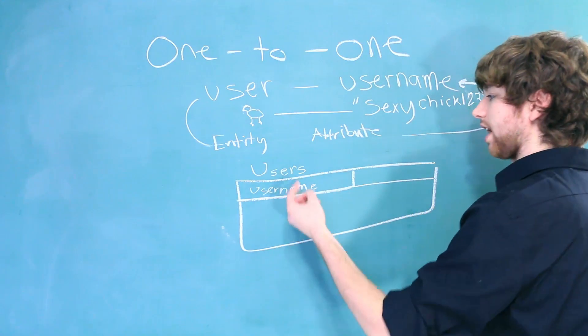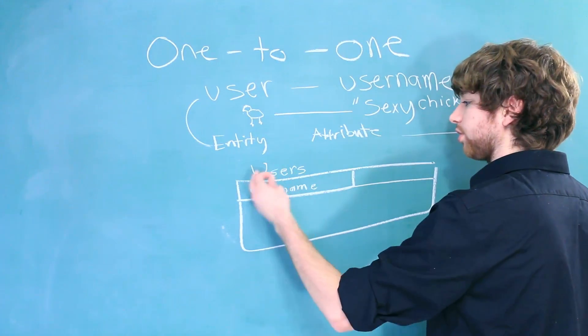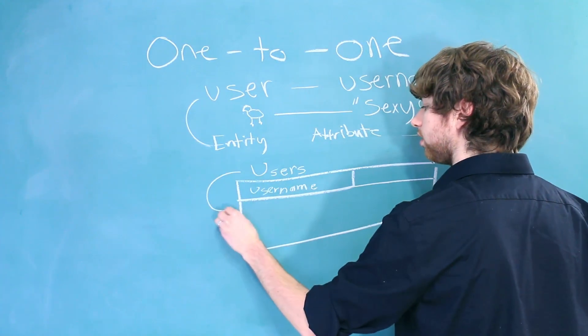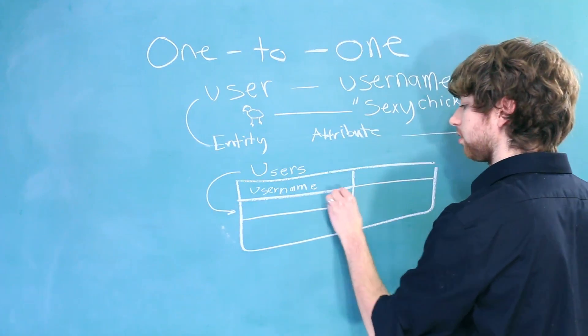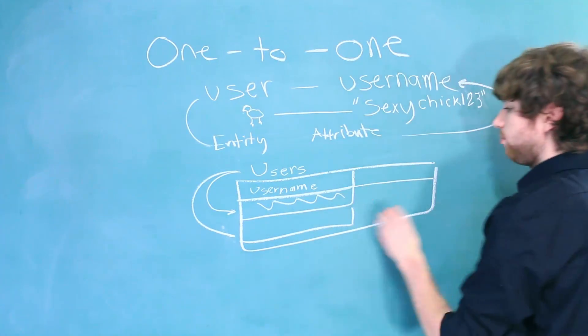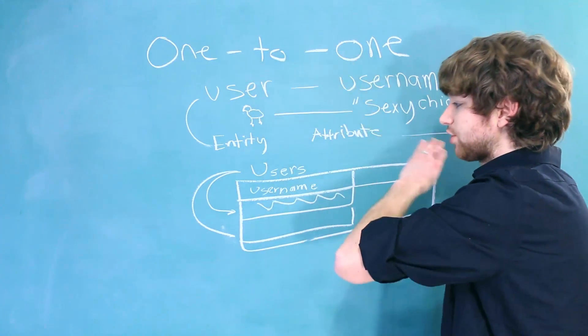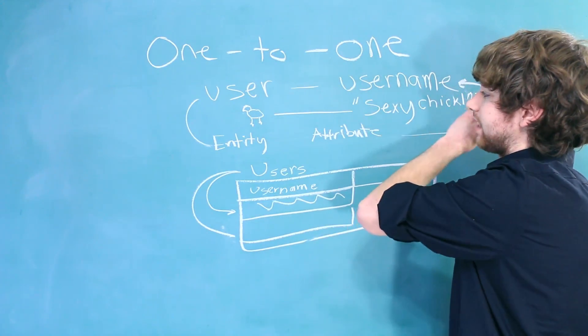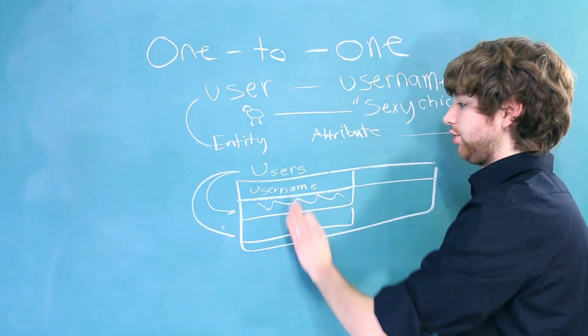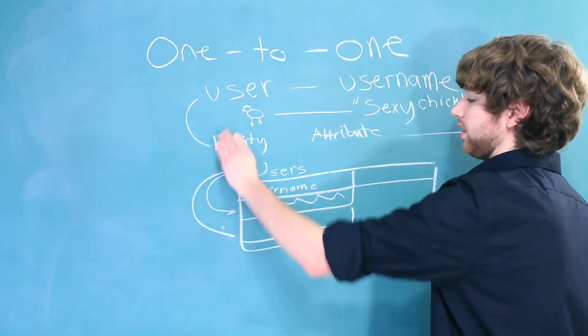Now, this forces every user to only have one username. That's because when we enter a new user, we'll put a row, we'll give it one username, and then the next user is going to have one username, and there's no more columns for another username. So, a one-to-one relationship, you can just think of it as an attribute describing an entity, and you can store the attribute as a column within a table that describes the entity.